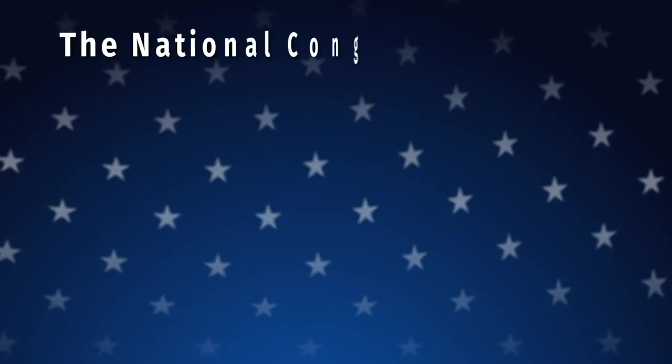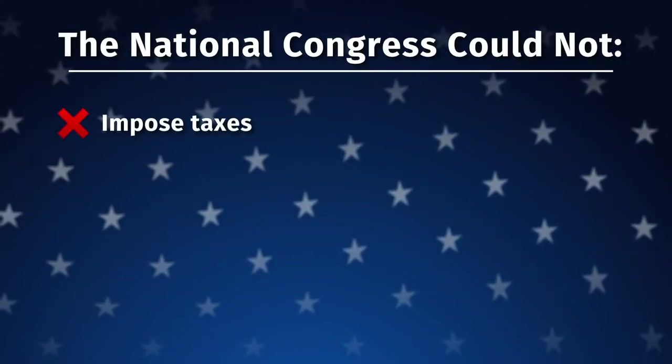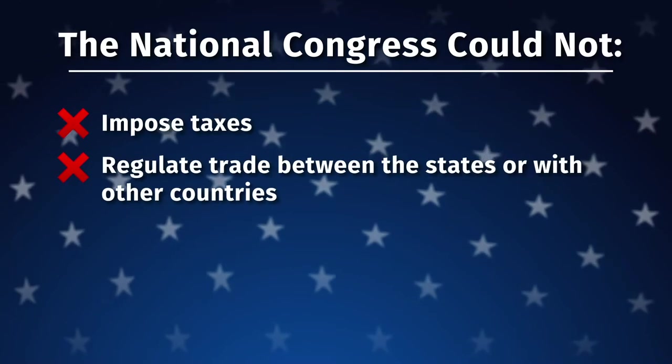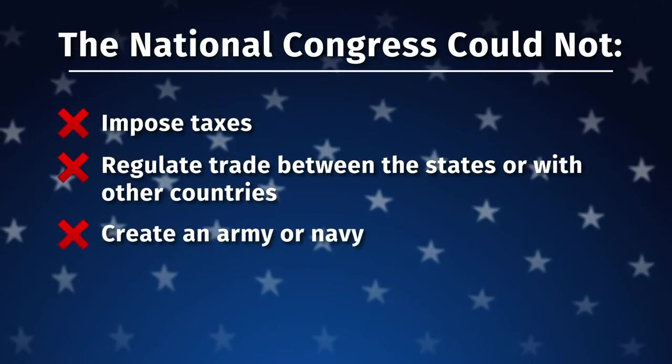This means the National Congress could not impose taxes, regulate trade between the states or with other countries, or create an army or navy. In effect, it was like the United States was 13 independent countries, all doing whatever they wanted. The national government had the responsibility to maintain the army, but they couldn't force citizens or states to send people to join it. For what soldiers they did have, they were responsible for paying their salaries, but they couldn't get money from the states to pay them.